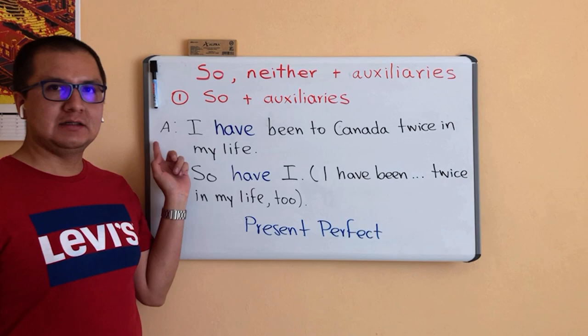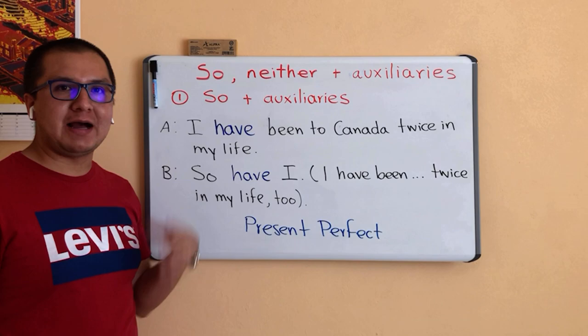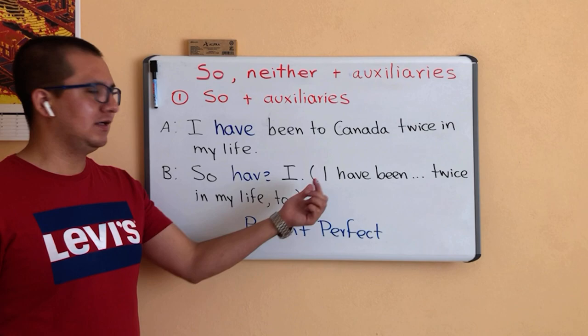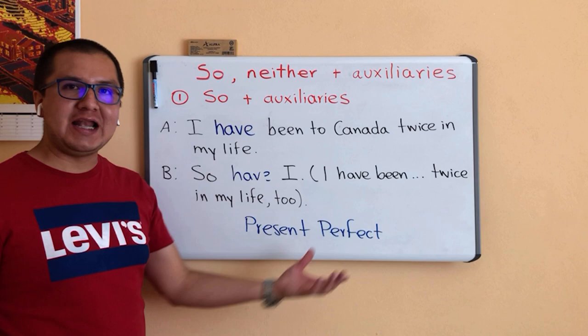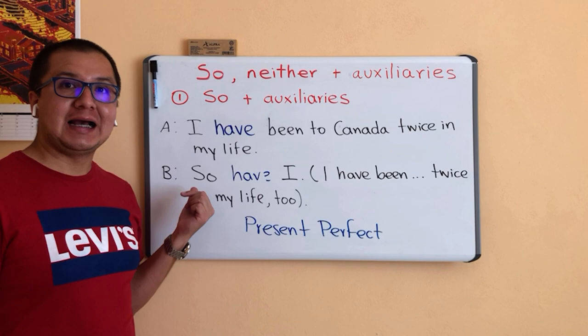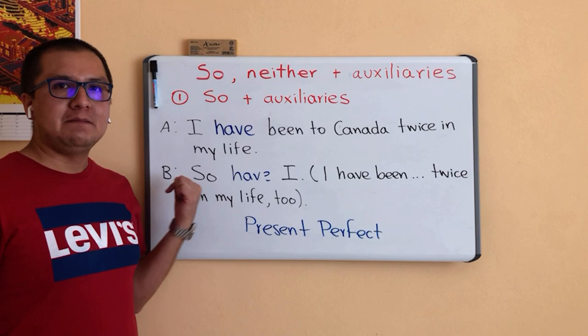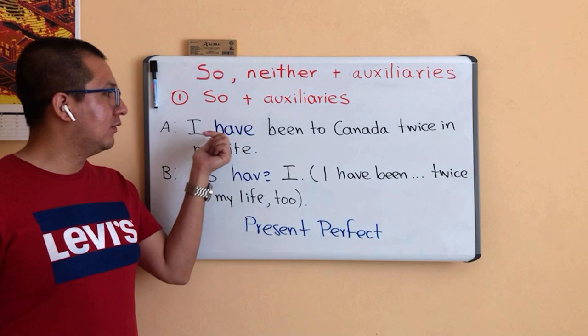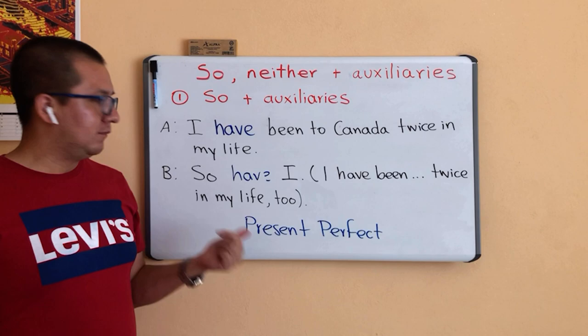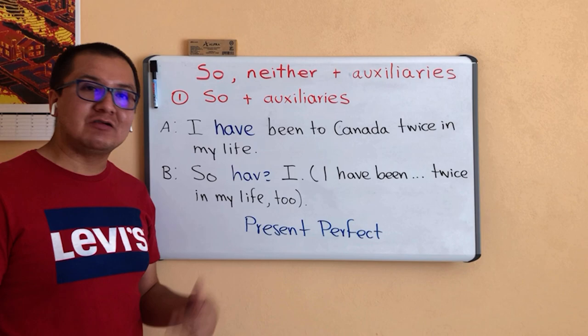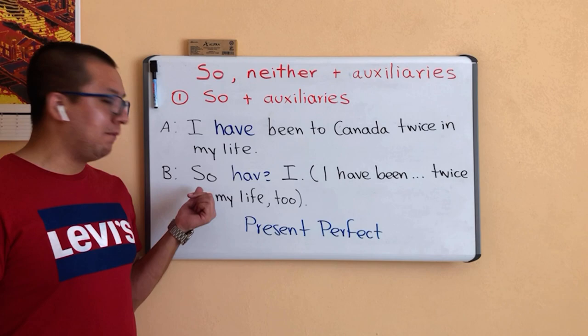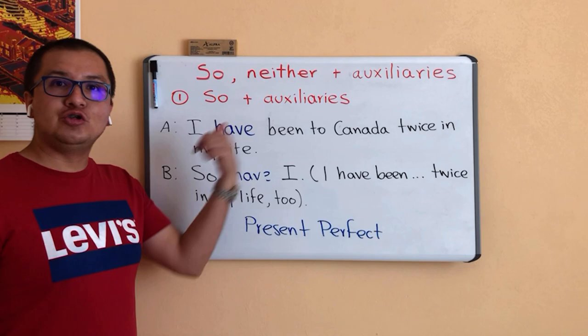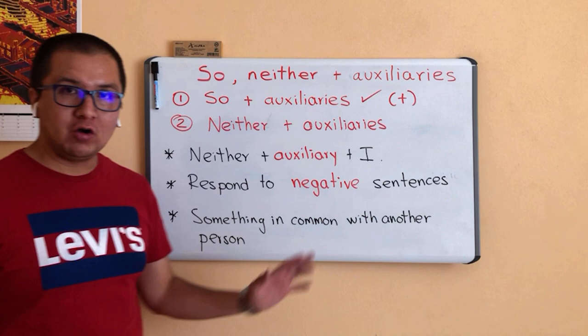Here is one extra example using SO plus Auxiliaries. Person B says: 'So have I,' meaning: I have been to Canada twice in my life too. Person B has the same opinion as person A and agrees with them. Look at the words in blue: HAVE — 'I have been.' HAVE is the auxiliary for present perfect. Person B responds to an affirmative sentence.